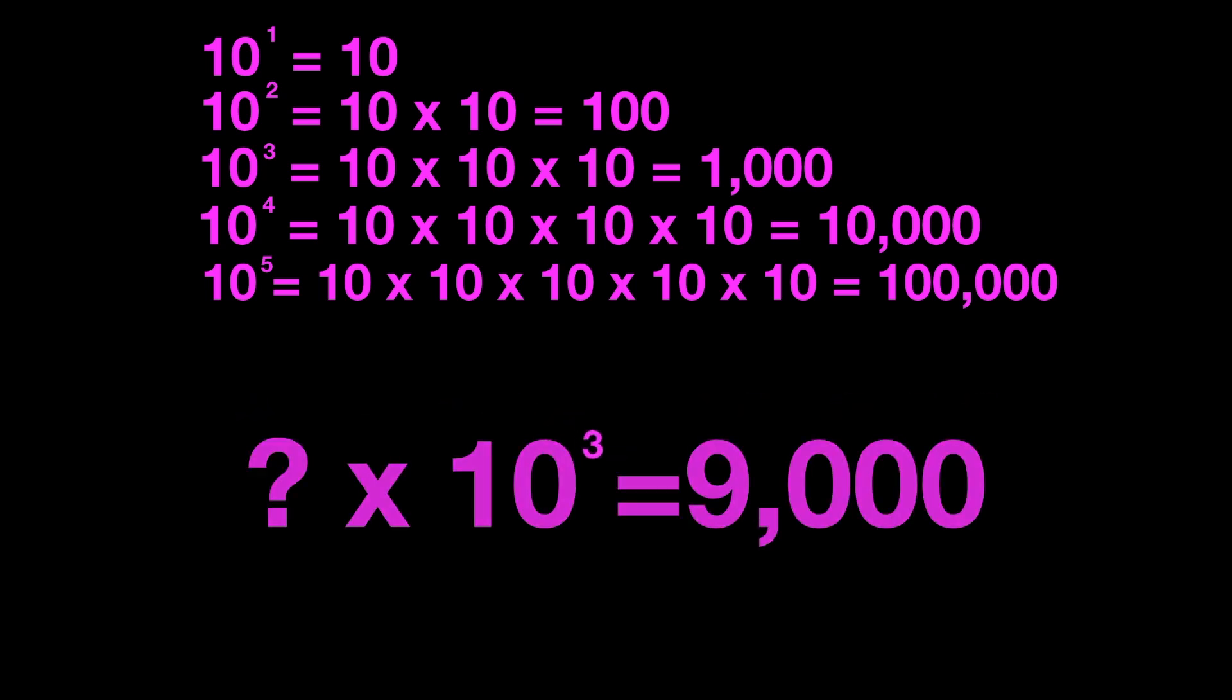How about this one? What number times 10 to the third power would equal 9,000? 9 times 10 to the third power would equal 9,000.